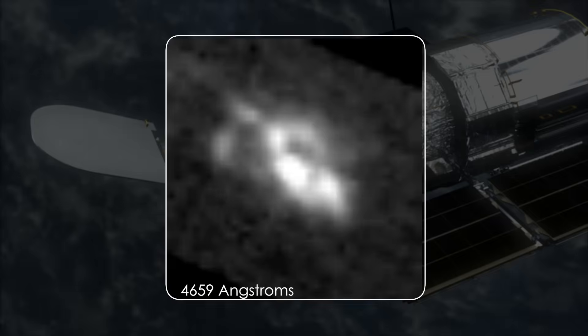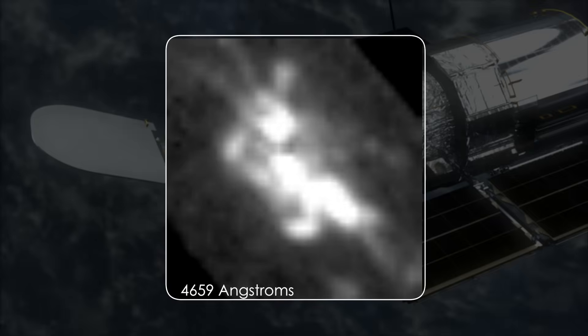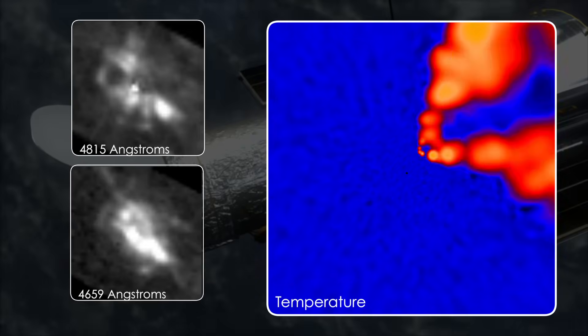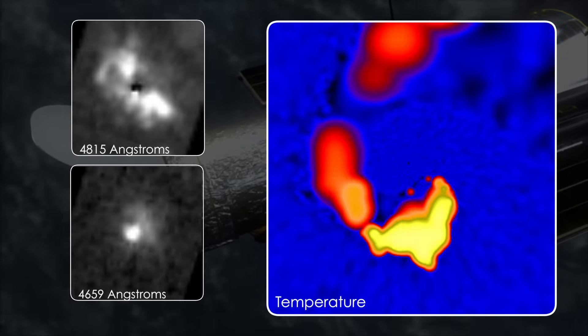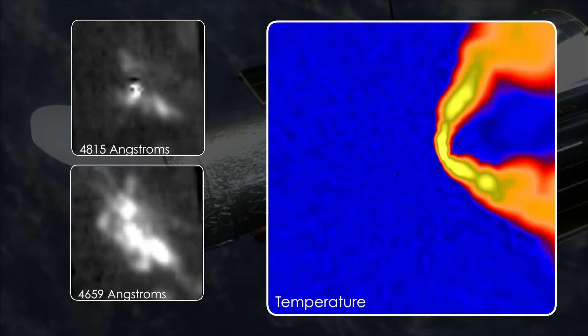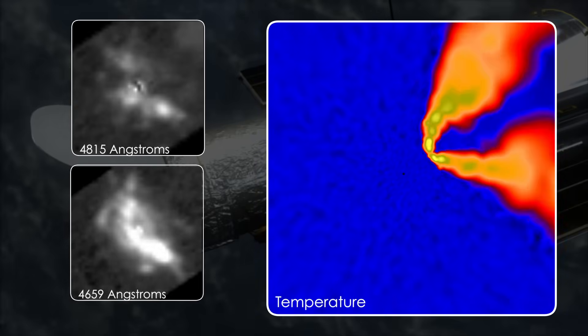This light dims near periastron when the secondary passes through the thickest part of the primary's wind. The gas relaxes, settling into a lower-energy state. As a result, the crab appears in a different spectral line until the stars move apart and the UV light is restored.